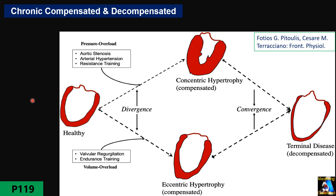If acute MR is not severe, it can progress through two stages. The first stage is compensated. In this situation, due to significant volume overload, the left ventricle increases slightly in size, but the most prominent change is hypertrophy — not significant, but enough to increase cardiac output. This hypertrophy is usually asymmetric. On the other side, left atrial compliance increases and it enlarges. With enlargement and improved vasodilator activity, LA pressure drops, pulmonary edema decreases, and patient symptoms resolve.